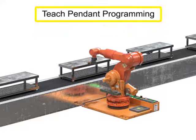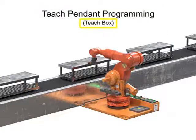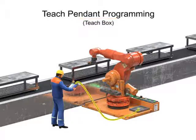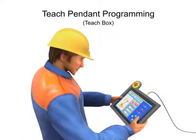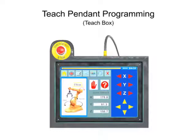A teach pendant, also called a teach box, is a handheld control and programming unit connected to the robot via a cable. Teach pendants can be touch screen, keyboard, joystick, or other computer interface. All typically have an emergency stop button since the robot is operating with the technician in the work envelope. More modern teach pendants can also be wireless.